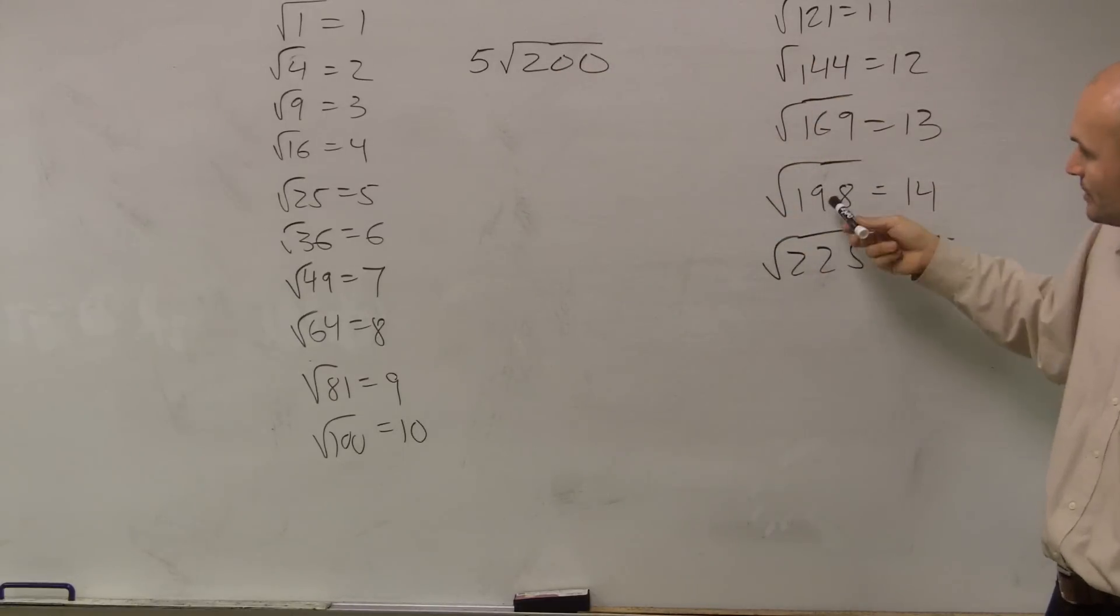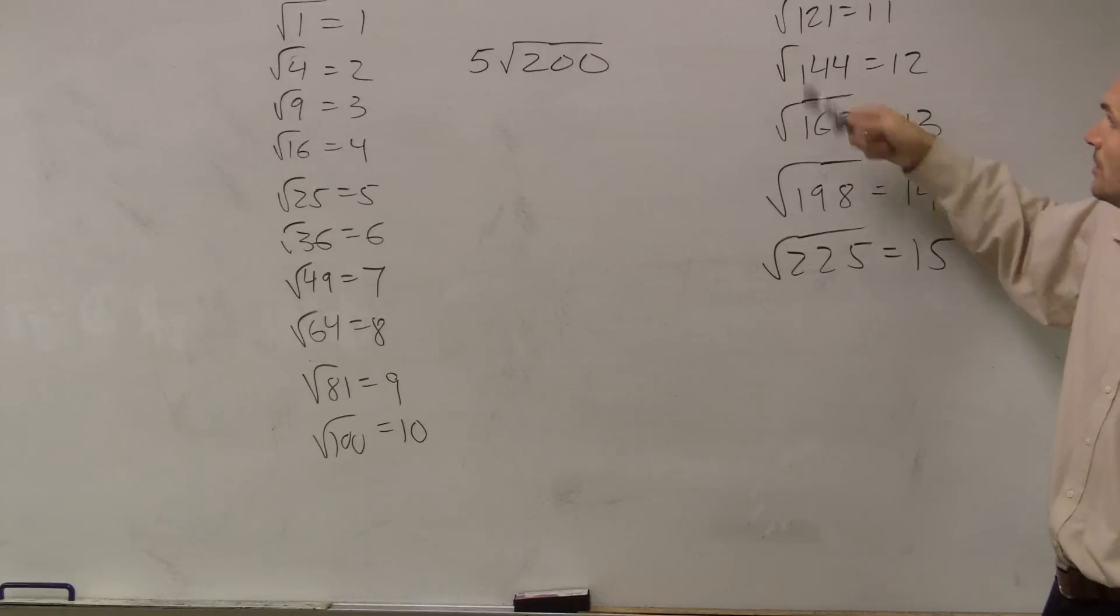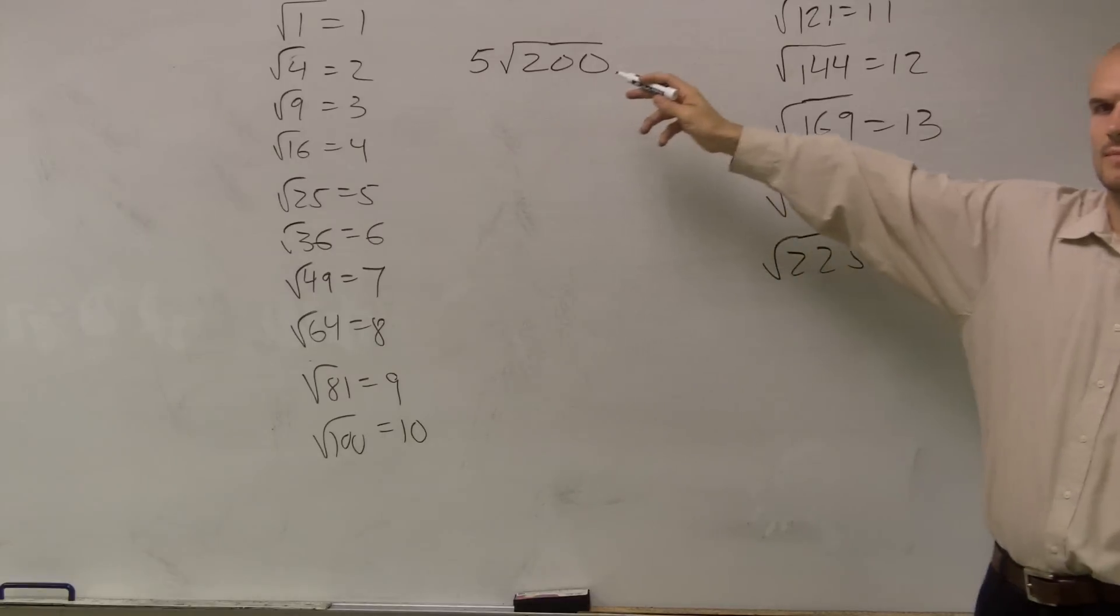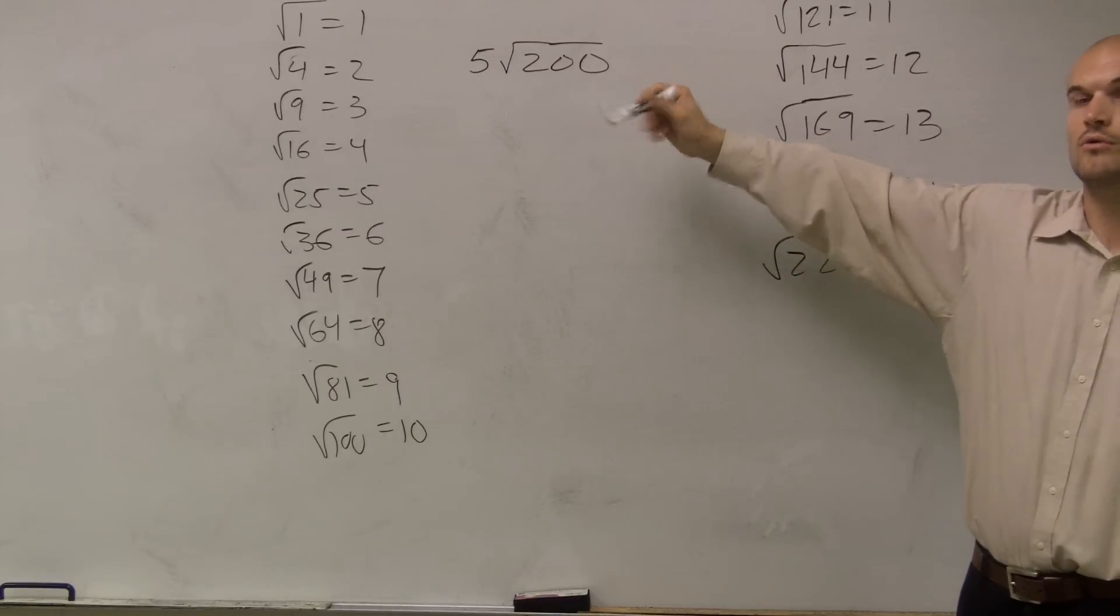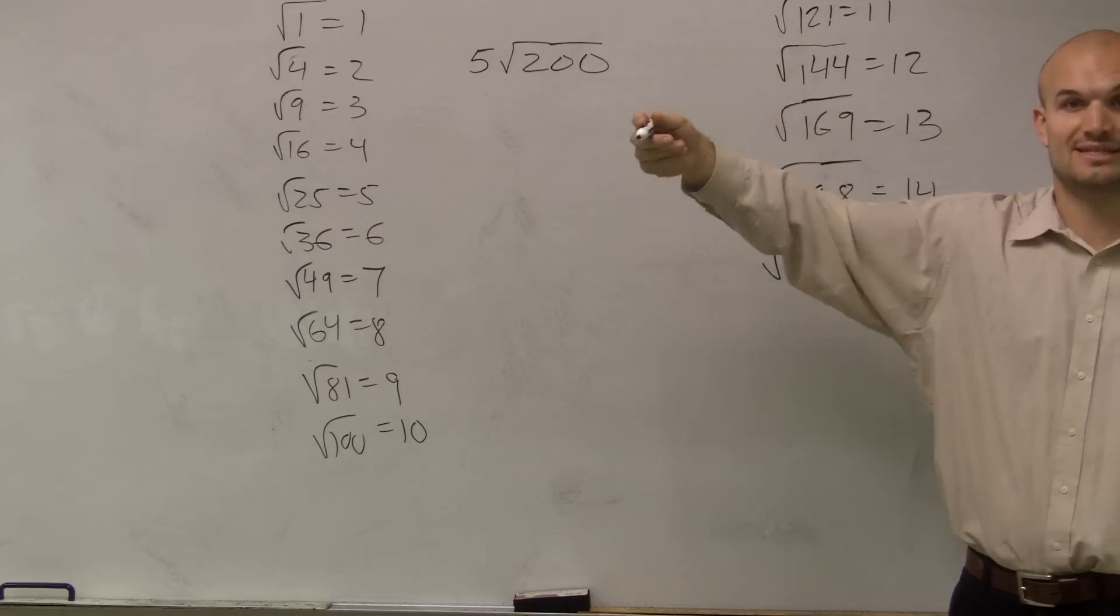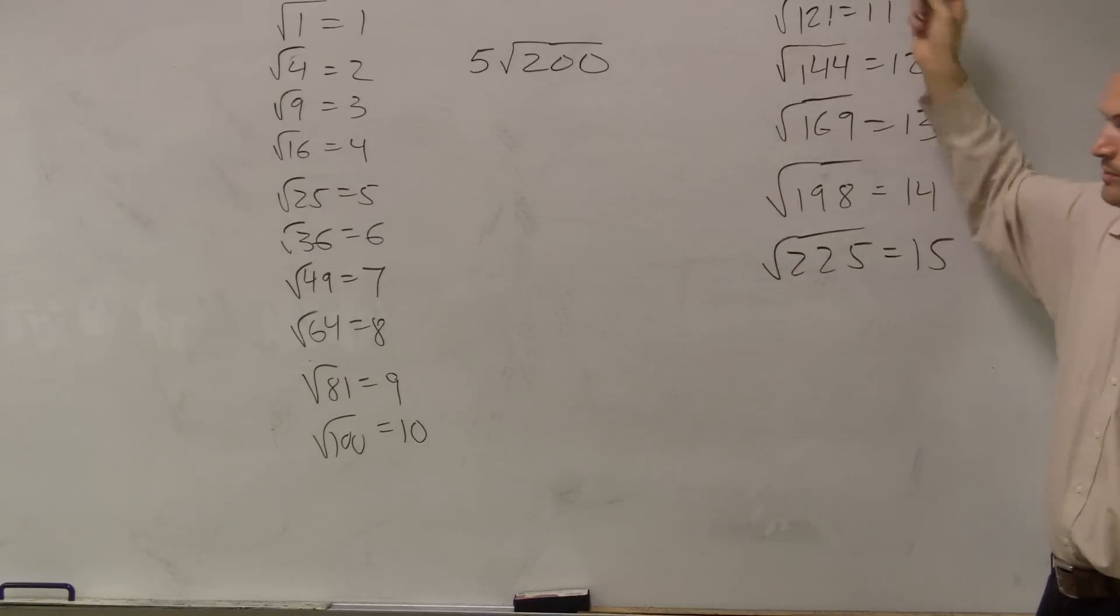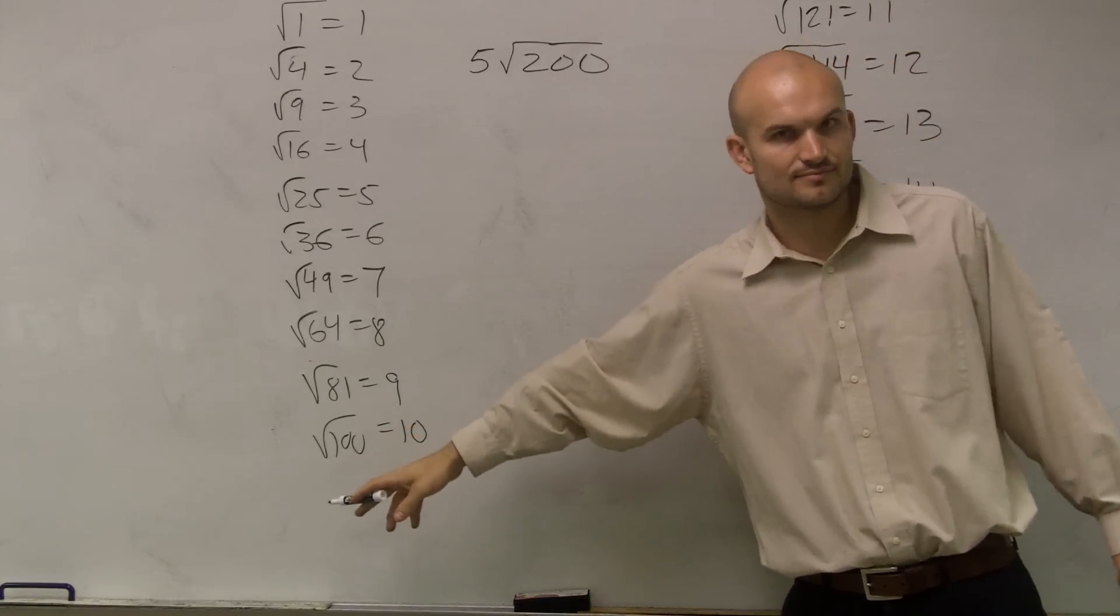So let's take a look at what is the largest number of these square numbers that evenly divides into 200. Does 144 divide into 200? Well, it goes in there one time, but it doesn't evenly divide, right? 121 doesn't evenly divide. Does 100 evenly divide? Yes.